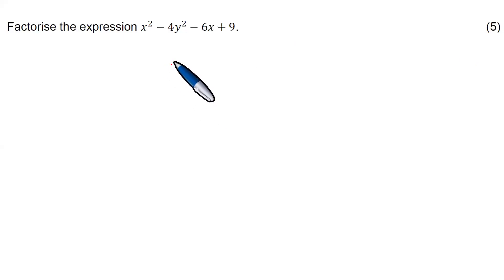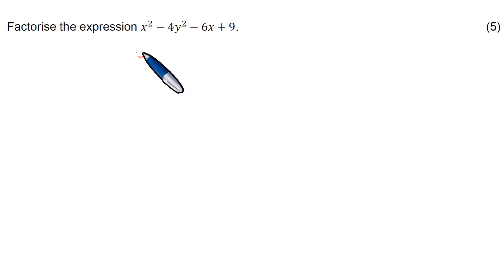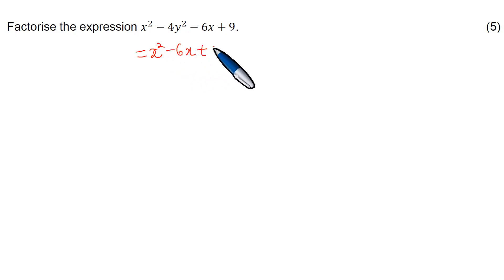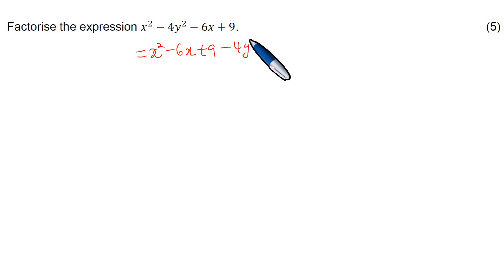We need to factorize the expression. To do so, we group like terms together and obtain x squared minus 6x plus 9 minus 4y squared.